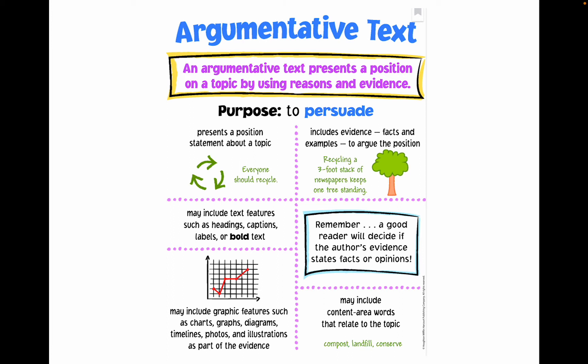This kind of text includes evidence such as facts and examples that the author will use to argue their position. Here's an example of why everyone should recycle: recycling a three-foot stack of newspapers keeps one tree standing. That is factual information that the author has researched in order to support their opinion.